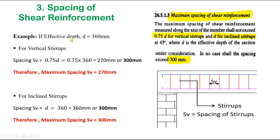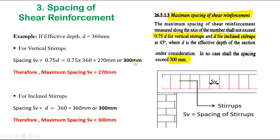Taking an example where the effective depth of the beam is 360 mm: for vertical stirrups, SV = 0.75 × 360 = 270 mm, and since 270 mm is less than the 300 mm limit, the maximum spacing is 270 mm. For inclined stirrups, SV = d = 360 mm, but since this exceeds 300 mm, the maximum spacing for inclined stirrups in this example is 300 mm.